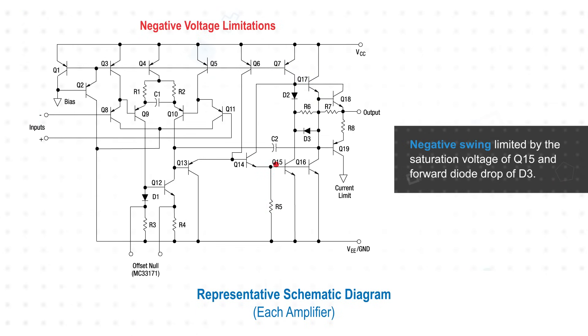The negative swing is limited by the saturation voltage of Q15 and the forward diode drop of D3, and can get within millivolts of VEE for sink currents below 4 milliamps.